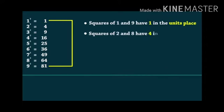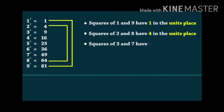You can see that squares of 1 and 9 have 1 in the units place, 2 and 8 have 4 in the units place, and 3 and 7 have 9 in the units place.